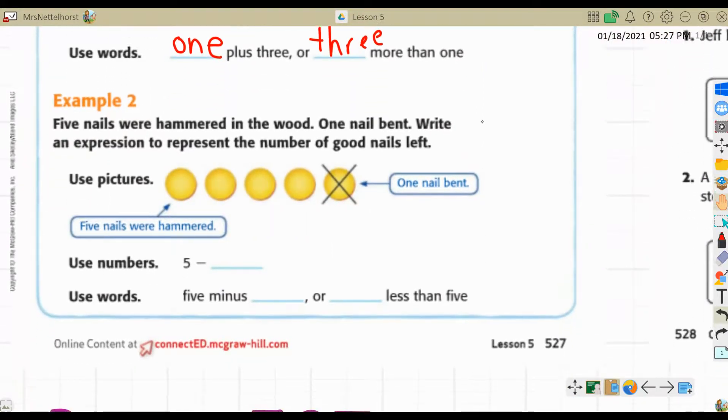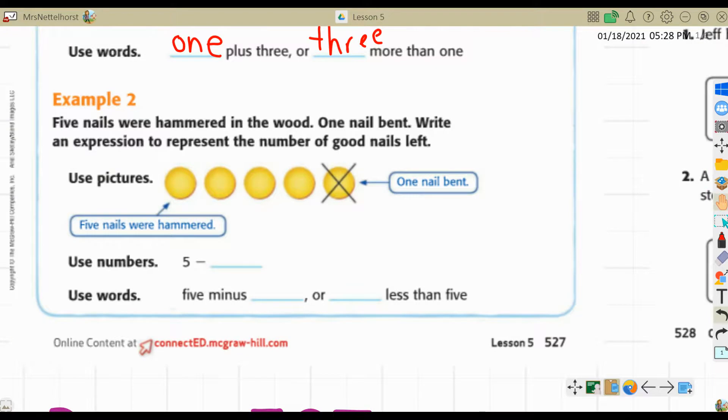Let's look at example two. Five nails were hammered in the wood, one nail bent. Write an expression to represent the number of good nails left. So we're going to use pictures. Five nails were hammered, those are our five circles right there. One nail bent, so it gets crossed out. Doesn't this look like subtraction from second grade? You cross out one picture and then you say how many are left. So we can use numbers. Five minus one. Or we can use words. Five minus one, or one less than five.